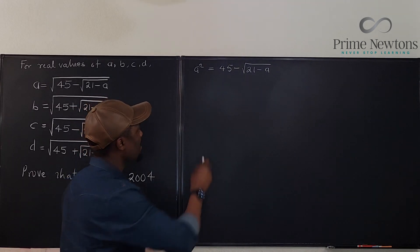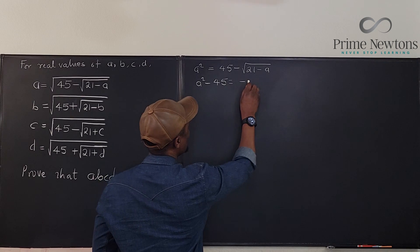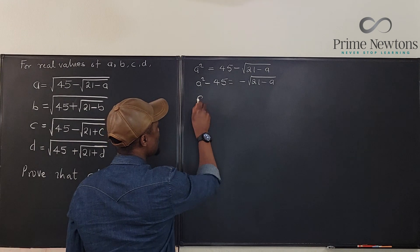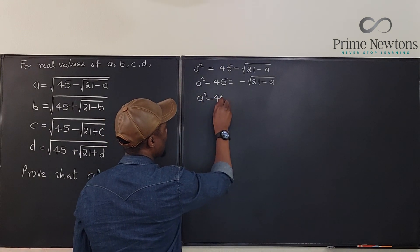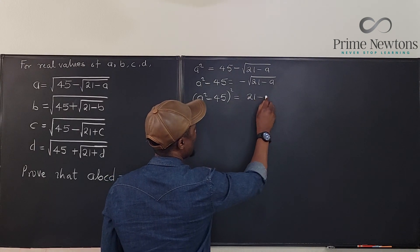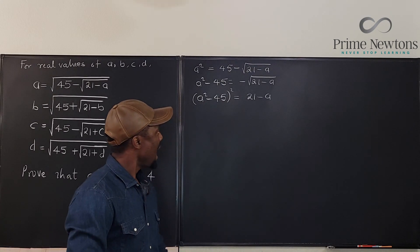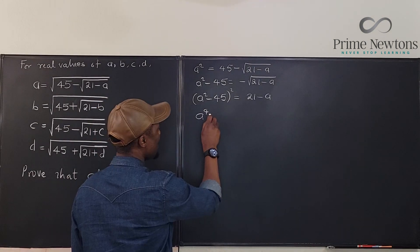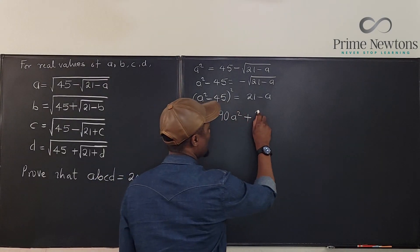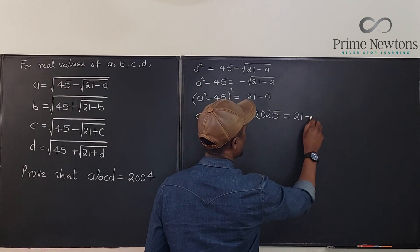We're going to have A squared equals 45 minus the square root of 21 minus A. Let's pull this 45 here. We're going to have A squared minus 45 will be equal to negative square root of 21 minus A. Can square both sides again. It means we have A squared minus 45 squared equals, if you square this, you're just going to have 21 minus A because the minus square root will disappear, right?